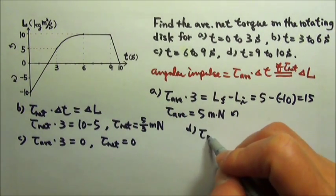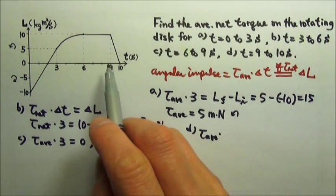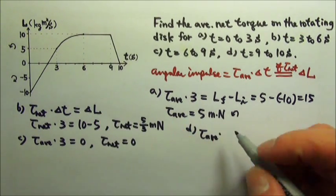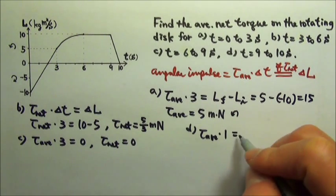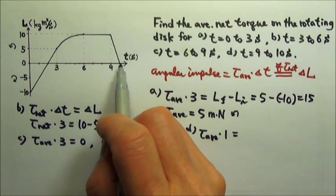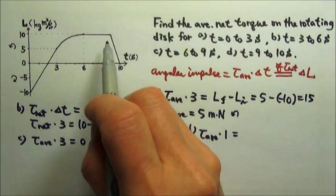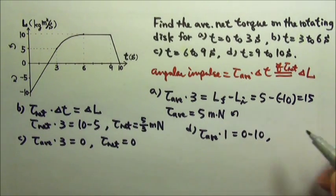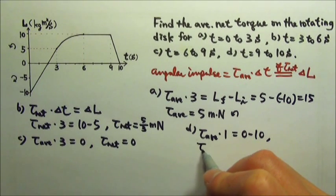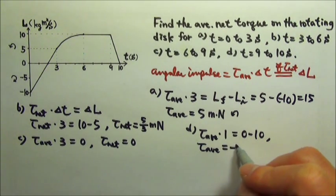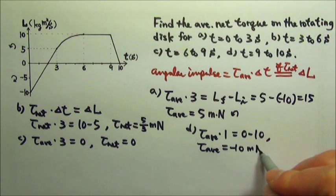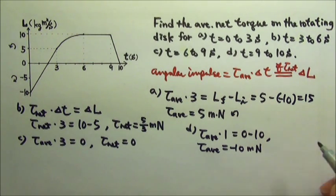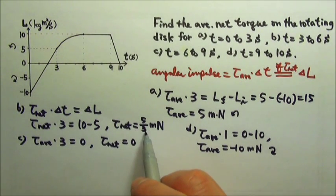Part D. The average torque times the time from 9 to 10 seconds, that's one second. And the delta L is final zero minus the initial 10. So it's zero minus 10. So the average torque is negative 10 divided by one, negative 10 meter newtons. And since it's negative, it must mean it's clockwise direction. And that one is positive, so that one is counterclockwise.